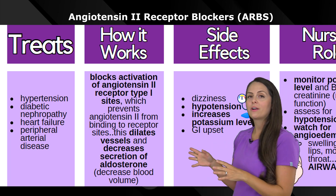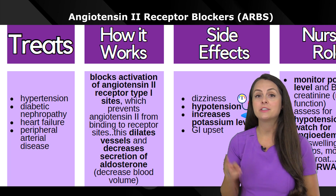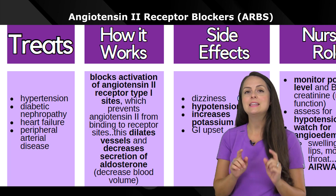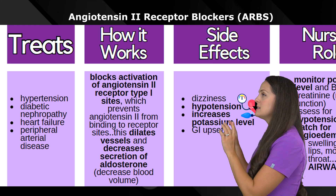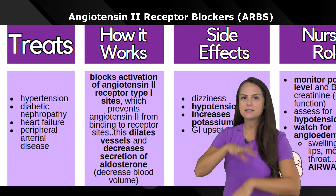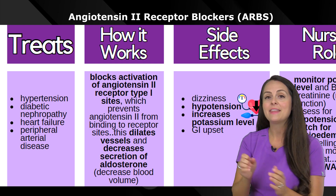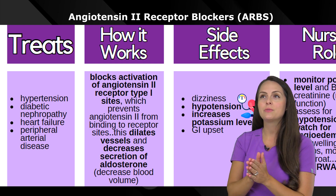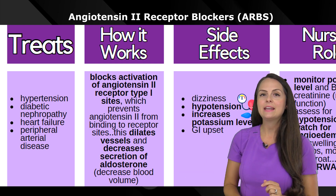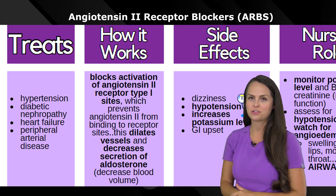ARBs work by blocking the activation of angiotensin 2 receptor type 1 sites. This prevents angiotensin 2 from binding to those receptor sites. Two key things to remember: that is going to dilate the vessels instead of constrict them, and it's going to decrease the secretion of aldosterone.